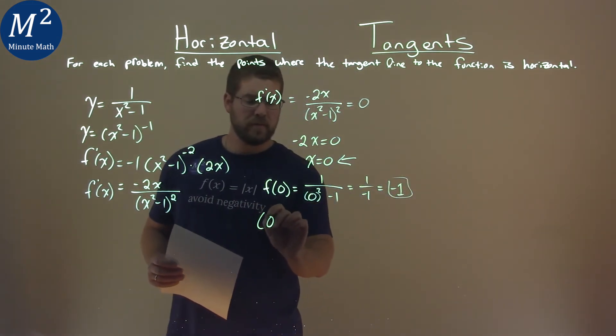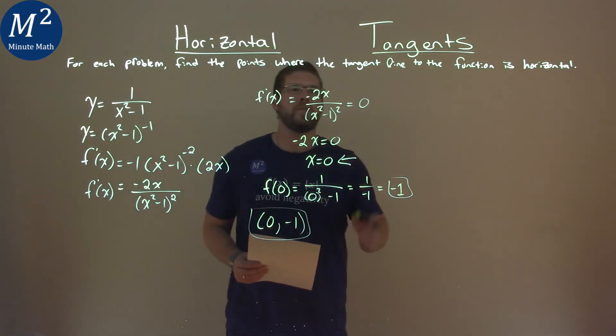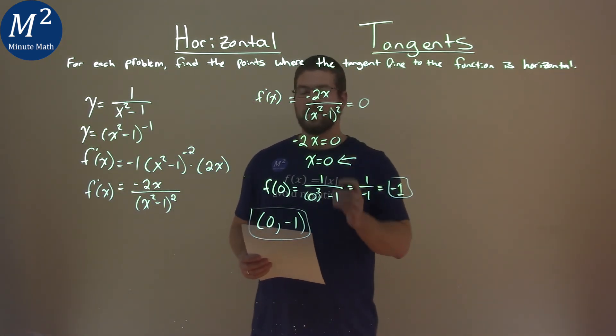And so we have a coordinate point here, 0 comma negative 1, and that is where the tangent line of the function is horizontal.